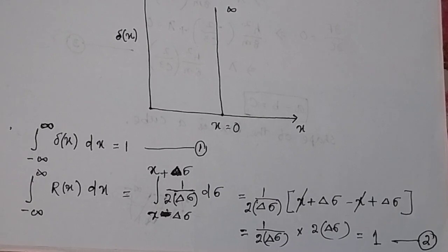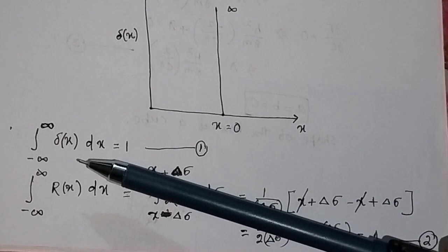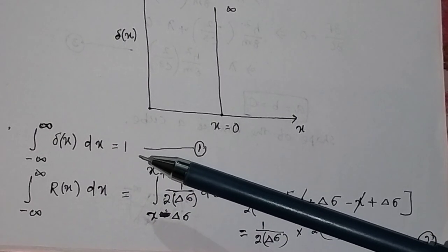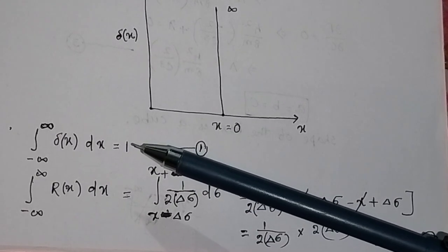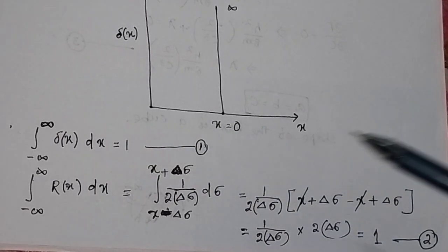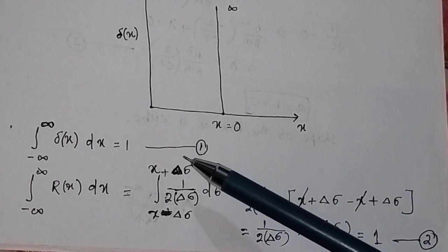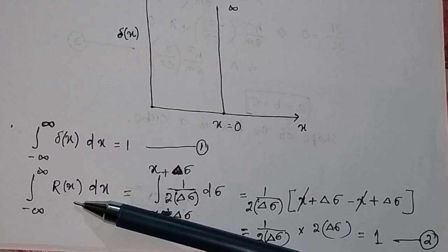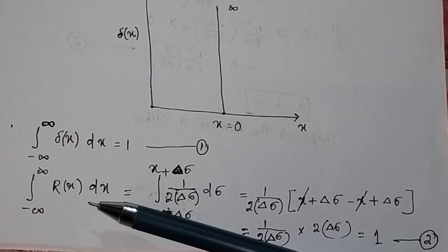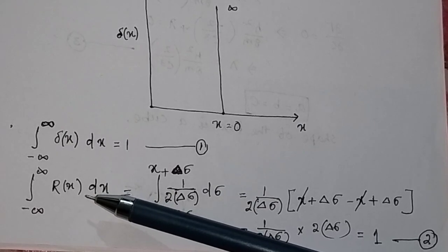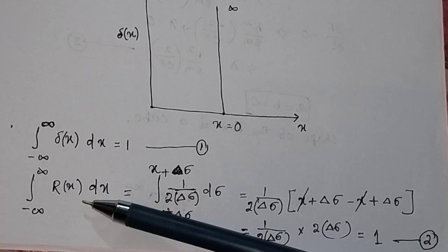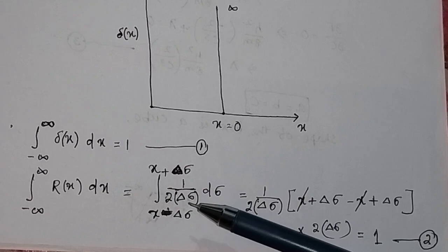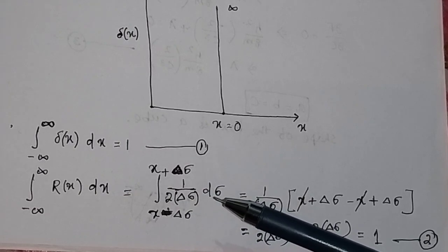Another identity of the Dirac delta function is that the integral of delta(x) dx from minus infinity to plus infinity equals 1. We have taken this identity from the Dirac delta function and we will show that in the case of the rectangular function, the same identity holds. We write the integral of R(x) dx, where the height of the rectangular function is always taken as 1 divided by the width, that is 1 divided by 2·Δσ.